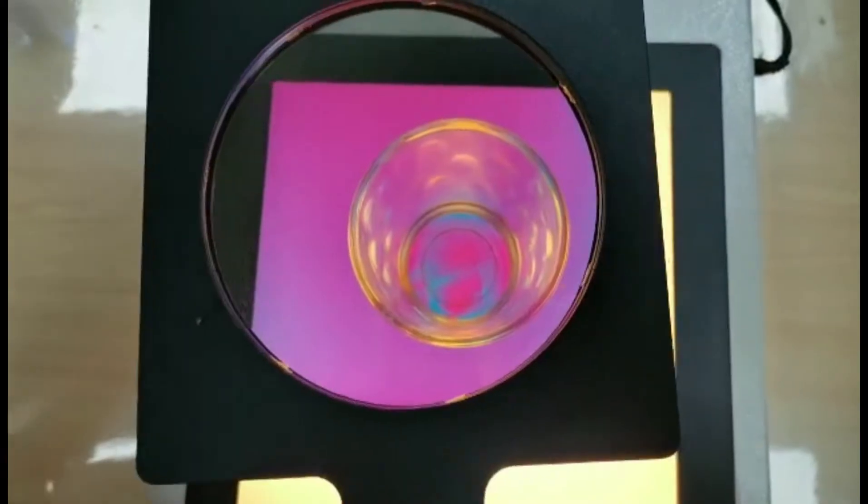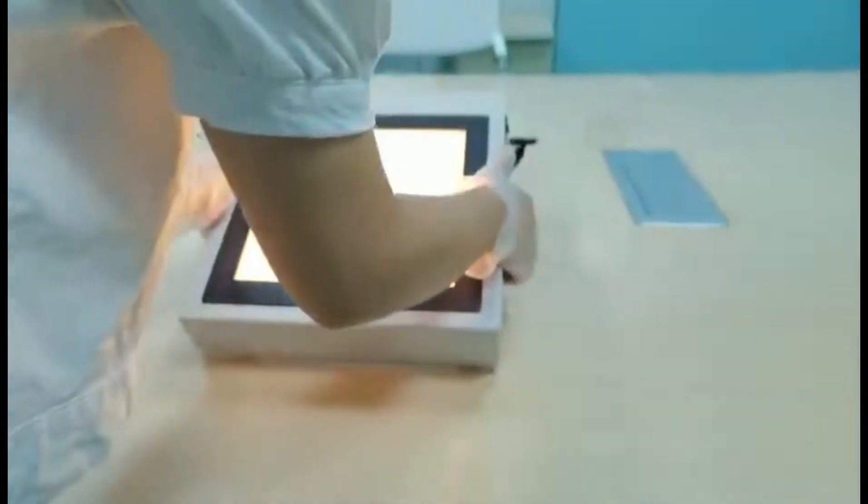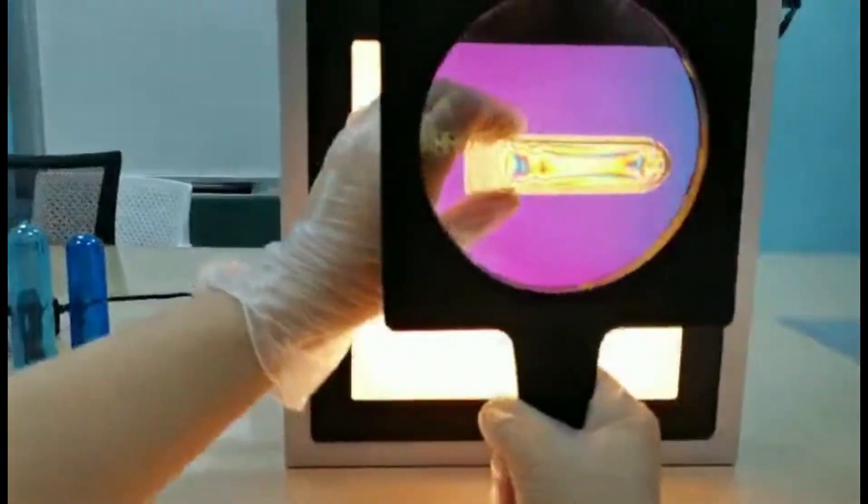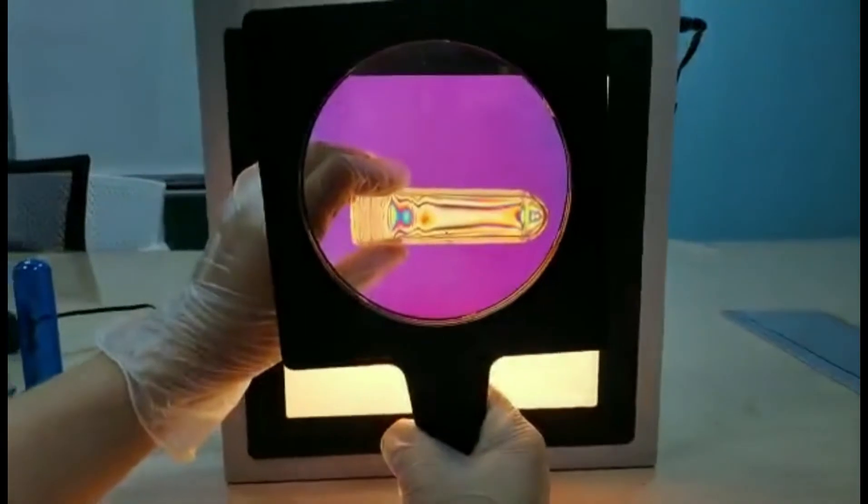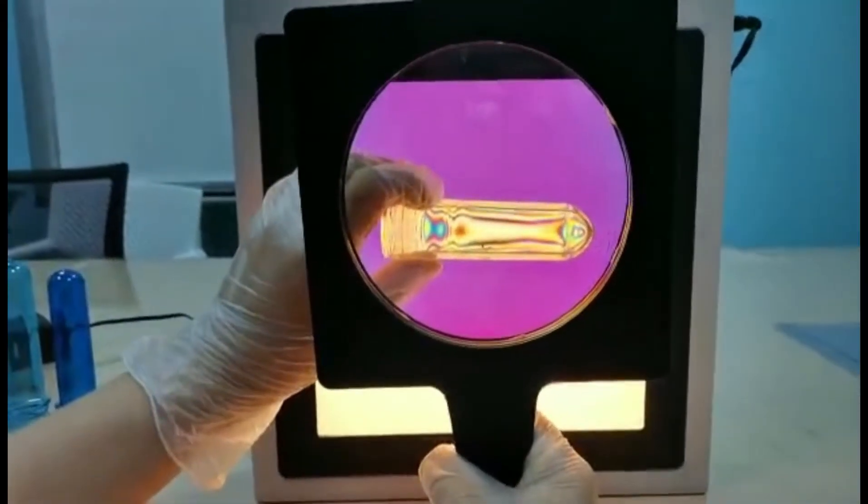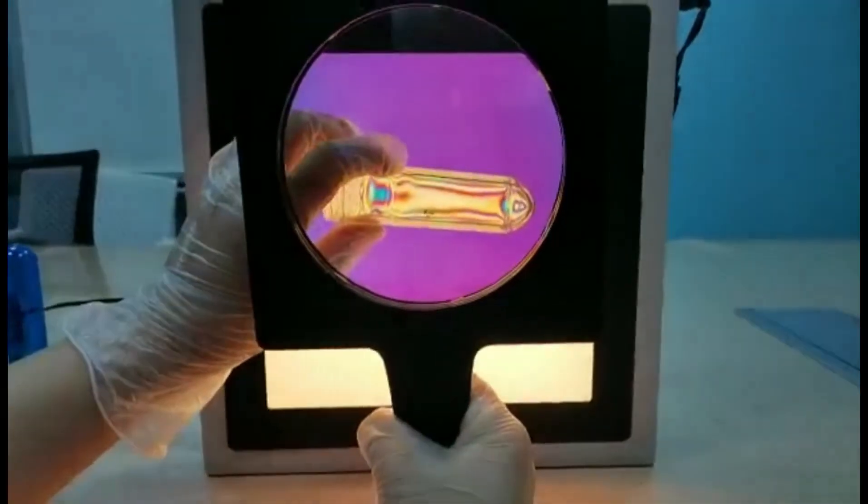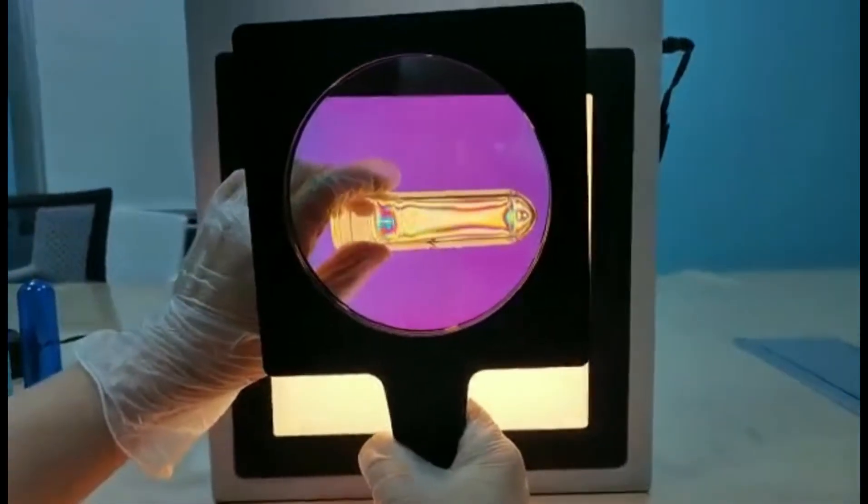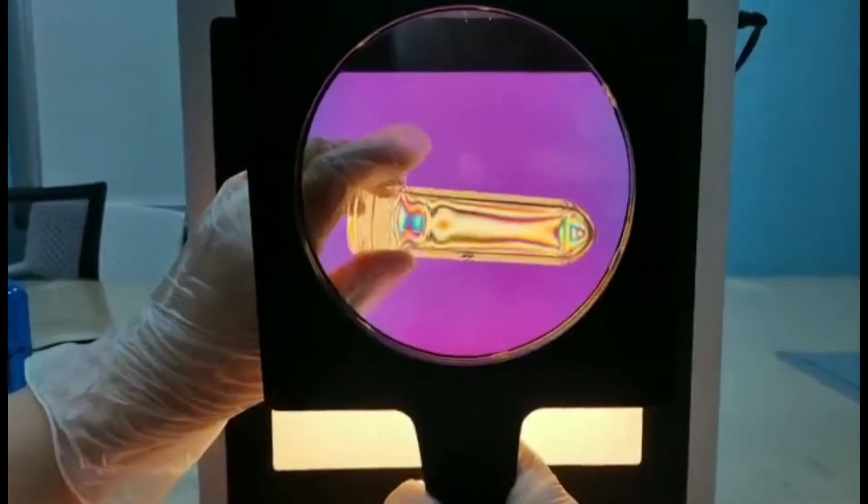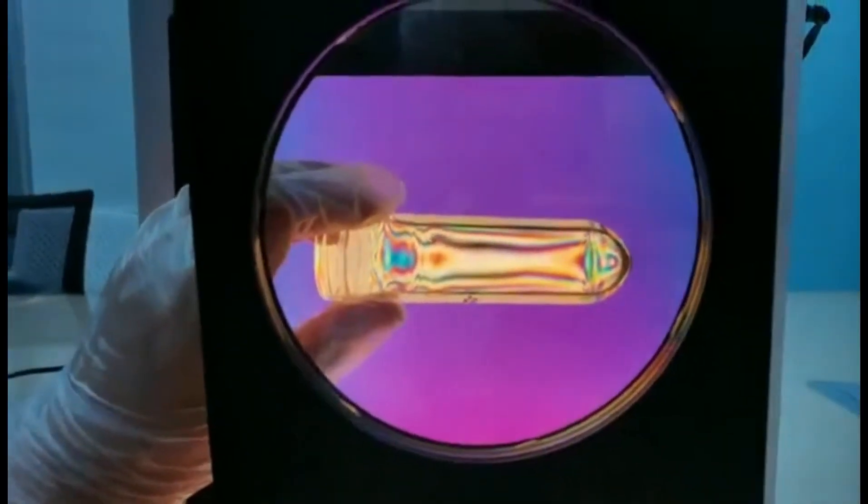Also, the polarizer can be placed in this way too. When we hold a preform between the analyzer and polarizer, we can see clear colored parallel strips on the side walls. This means this preform is in good condition.